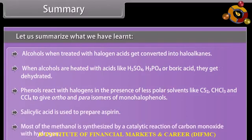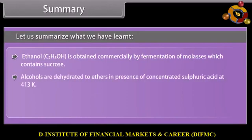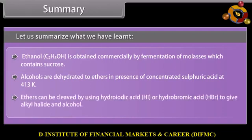Most methanol is synthesized by a catalytic reaction of carbon monoxide with hydrogen. Ethanol is obtained commercially by fermentation of molasses which contains sucrose. Alcohols are dehydrated to ethers in the presence of concentrated sulfuric acid at 413 K. Ethers can be cleaved by using hydroiodic acid or hydrobromic acid to give alkyl halide and alcohol.